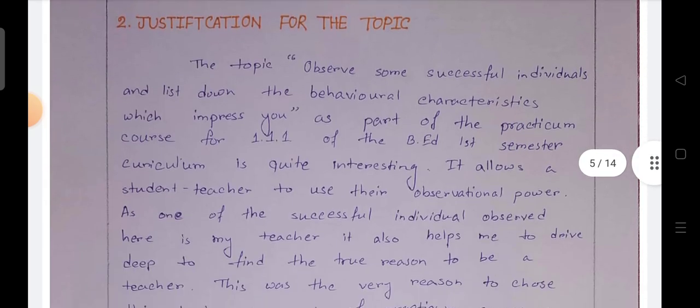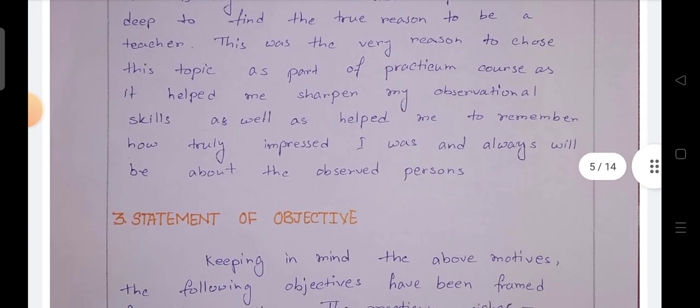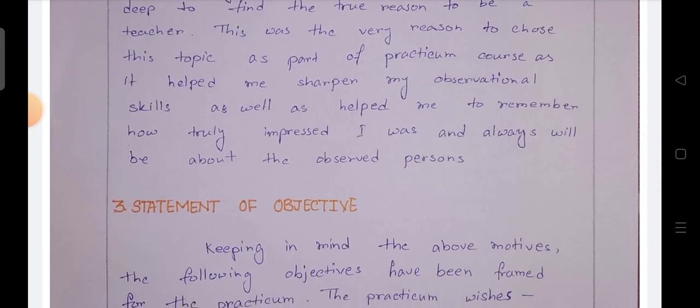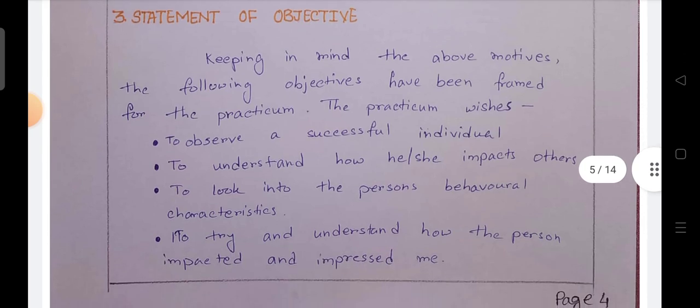Number two, justification for the topic. The topic observe some successful individual and lays down the behavioral characteristics which impress you. This was a very good reason to choose the topic as a part of practicum course. It helped me sharpen my observational skill. Number three, statement of objective. Keeping in mind the observe motives, the following objectives are as follows.